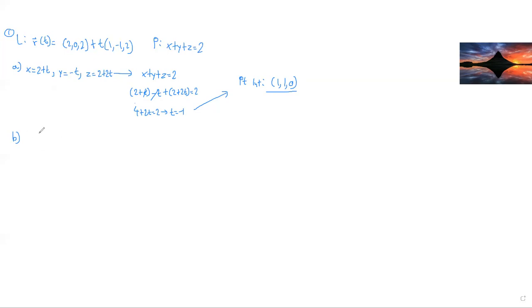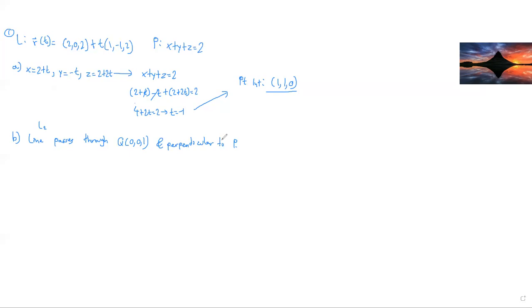Let's do part b. Consider a line — call it L2, so it's not the same line L — that passes through point q at (0, 0, 1) and is perpendicular to plane P. Let's find the vector equation for this.